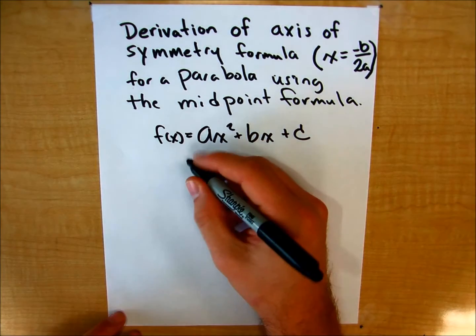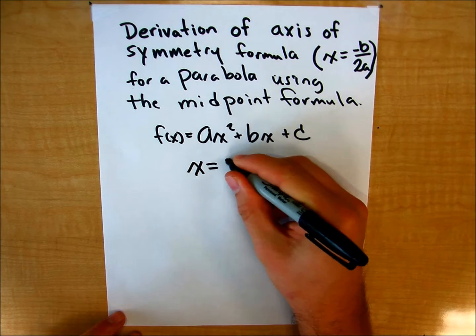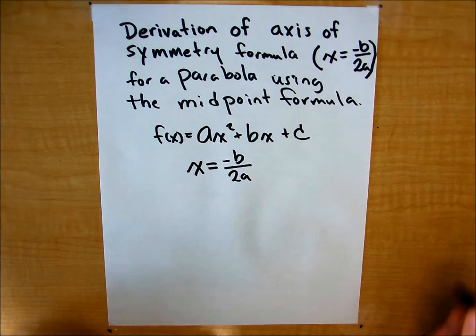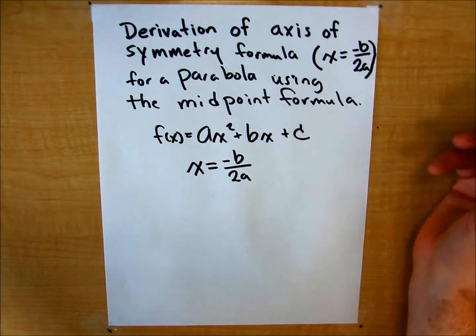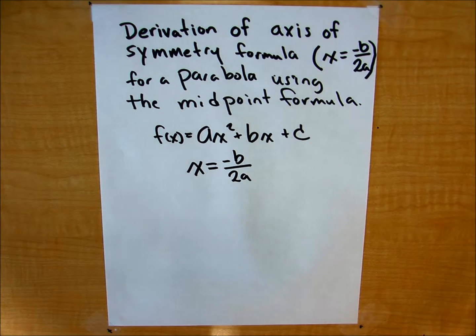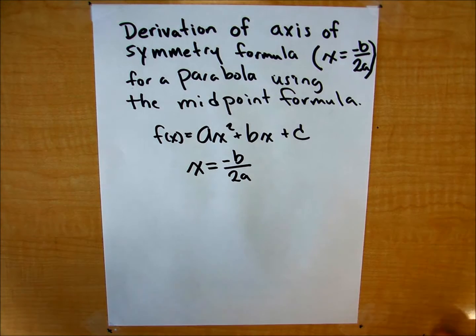You can find that by plugging in your b and a value into this formula, x equals negative b over 2a. And that will give you a vertical axis of symmetry line. It will also give you the x coordinate of your vertex.